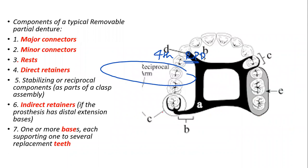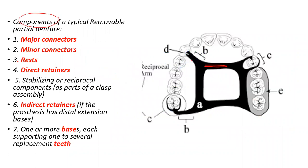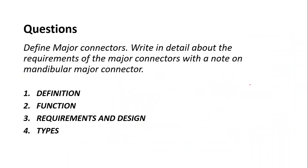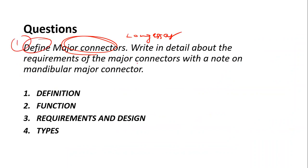We have already completed the basic component parts of an RPD, which were the major connector, the minor connector, the direct retainer, indirect retainer, the denture base, and the artificial teeth. The main long essay question that comes in this topic covers the definition of the major connector, the requirements of the major connector, and a note on the mandibular major connectors.